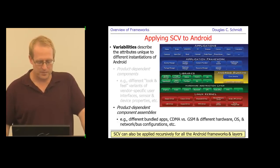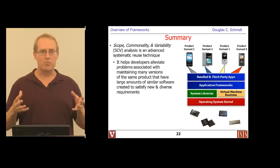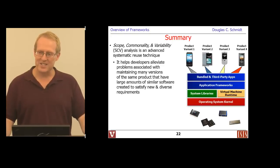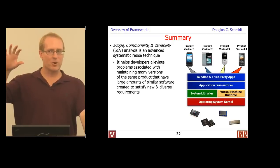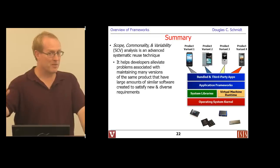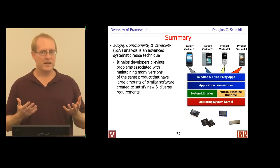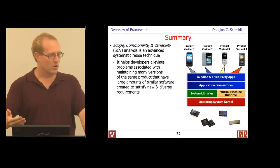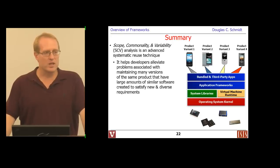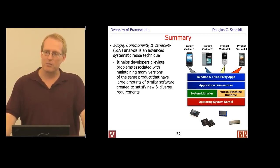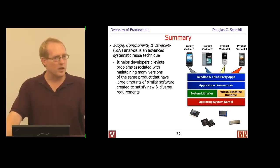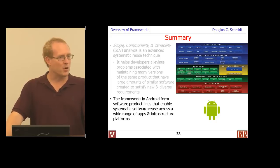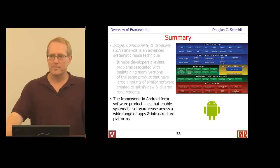We can apply the SCV approach recursively throughout the different layers, and I'll keep pointing out the common parts versus the variable parts as we go through activities and services. To wrap it up, scope commonality and variability analysis is a general-purpose method for developing systematically reusable artifacts. Android provides a very nice example of a product line architecture with a whole pile of frameworks that simplify the development of mobile applications — both tablets and smartphones — in a resource-constrained domain.